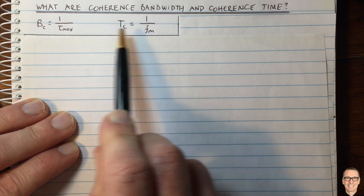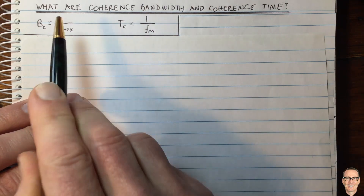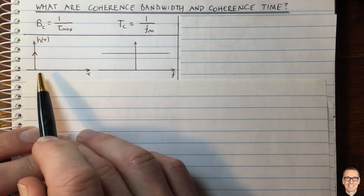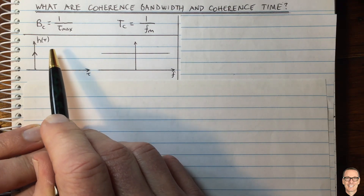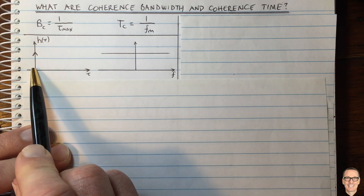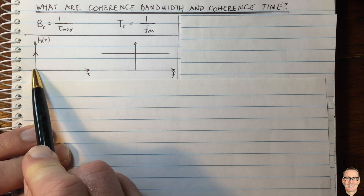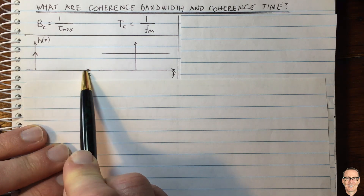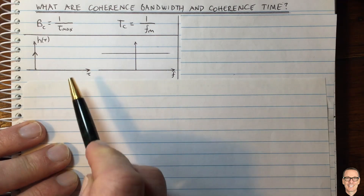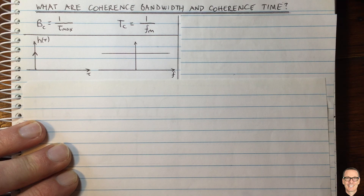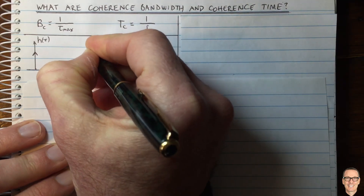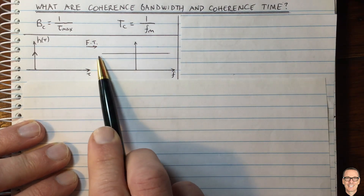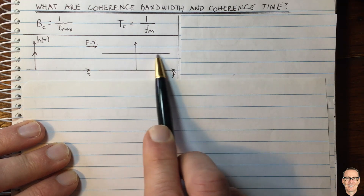Now, why are these things defined in this way? Let's start with the coherence bandwidth. Let's think about the delay in a channel and its effect on the bandwidth. Here we've got a channel where there's just one component — no multipath. In this case, the impulse response of the channel as a function of the delay τ is just a delta function. The Fourier transform of this gives us the frequency domain response, and a delta transforms to a flat response in the frequency domain, so we call that a flat fading channel.